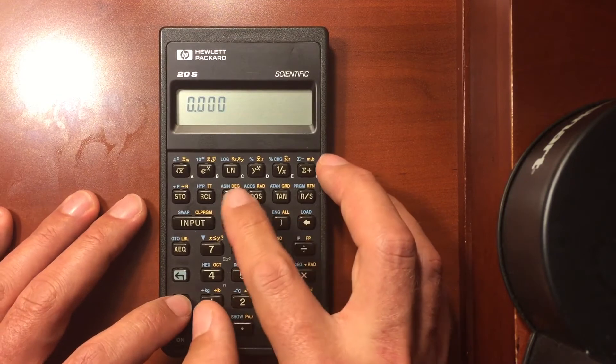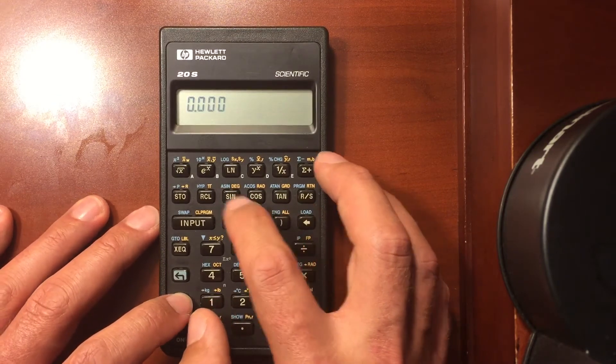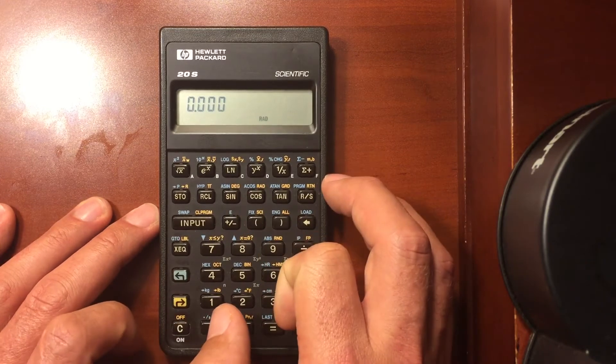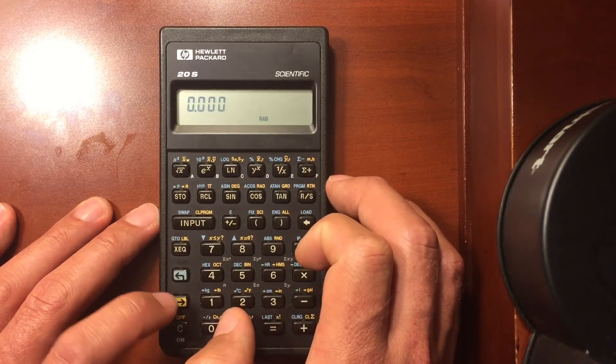You can set the calculator in degrees or radian mode. There's no menu here. So if I want to go to degrees mode, I do shift to that. I can shift to radian mode. And now I have the annunciator telling me I'm in radian mode.